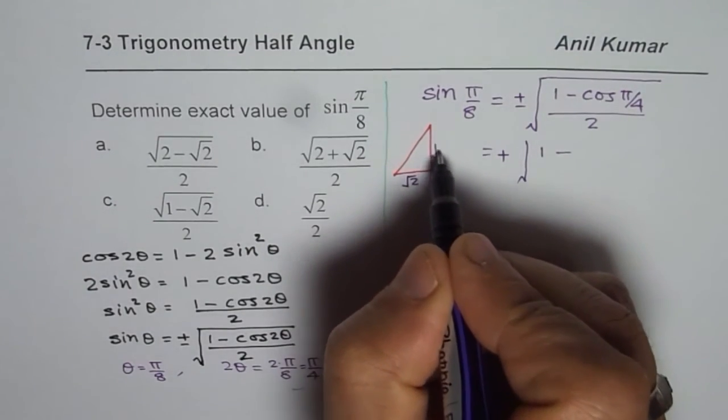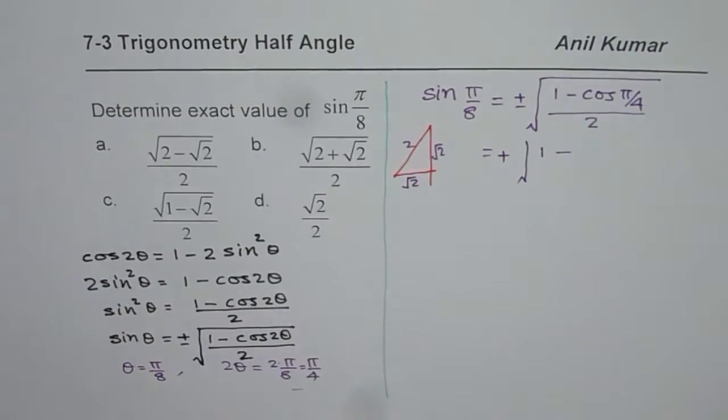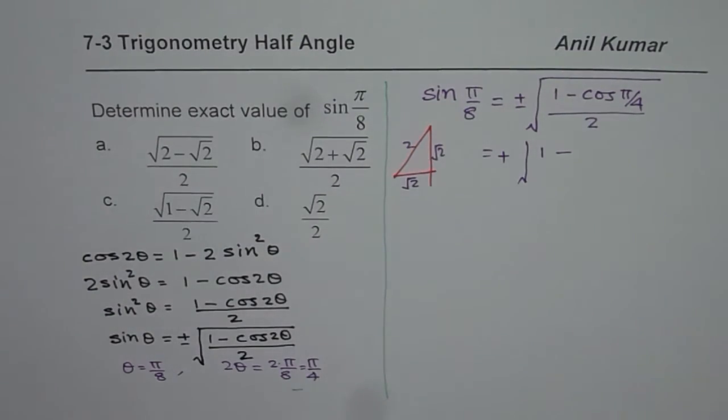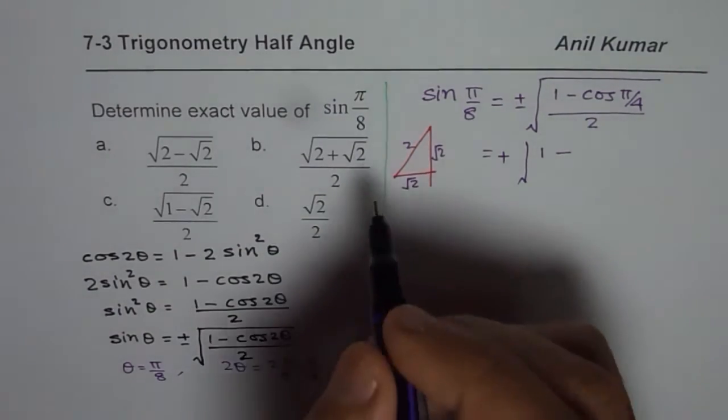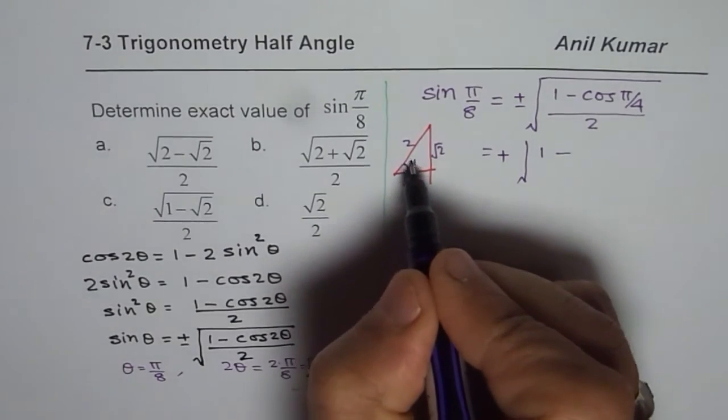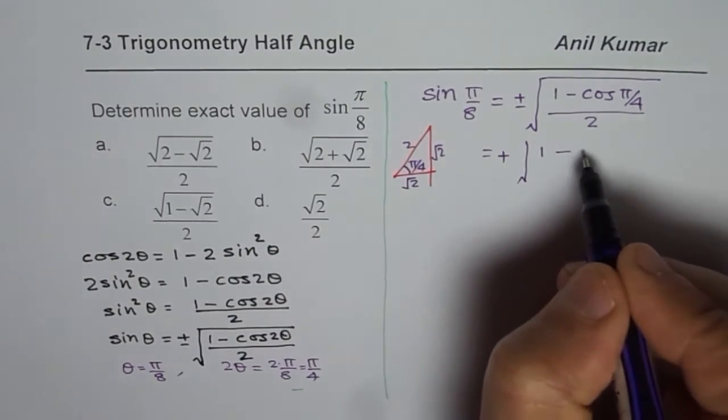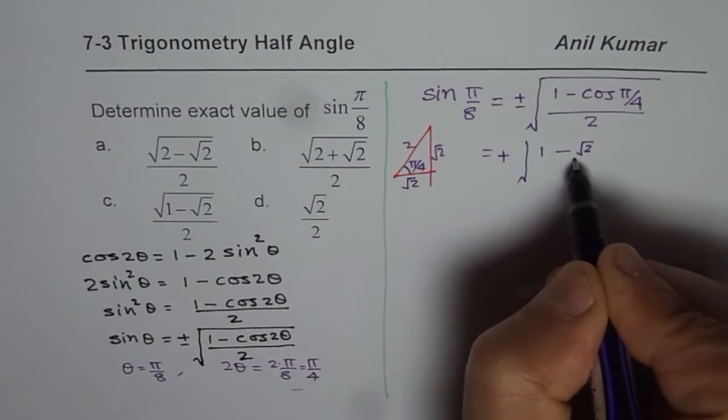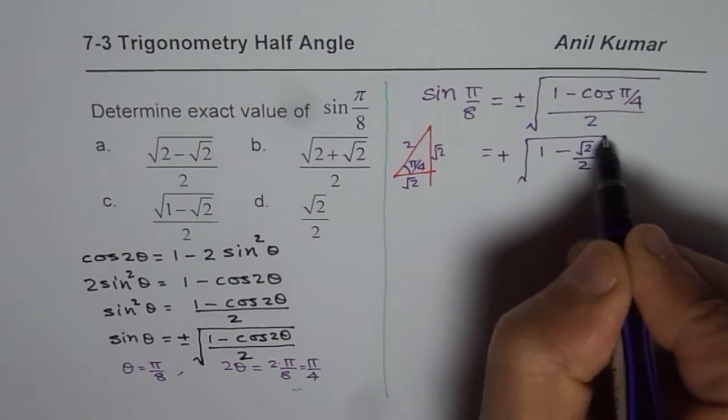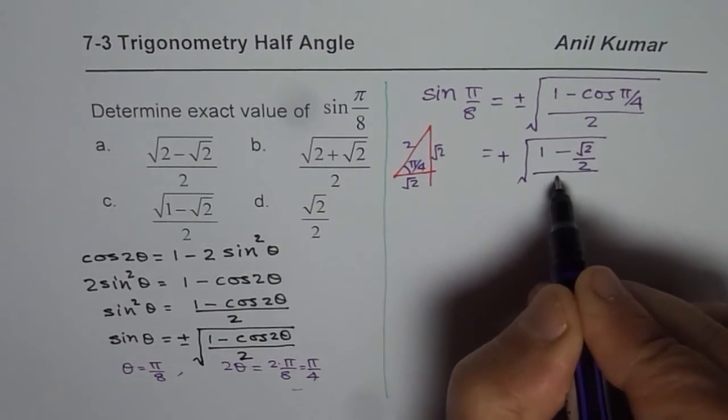So it is better to use the one with square root 2, square root 2, so that you do not have to rationalize. So cos of pi by 4 is square root 2, over 2, divided by 2.